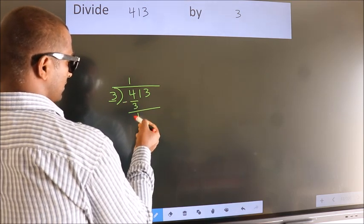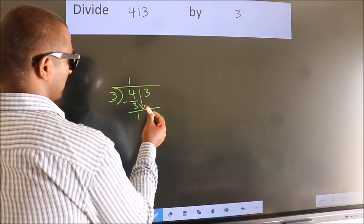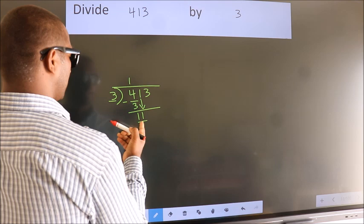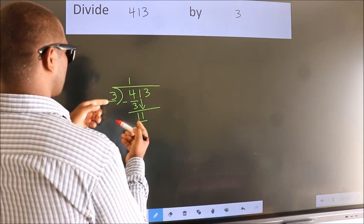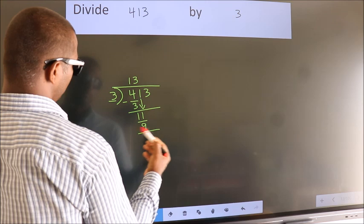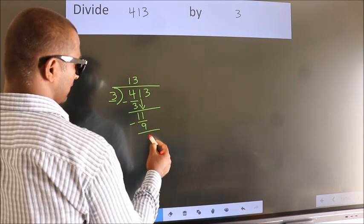After this bring down the beside number. So 1 down. So 11. A number close to 11 in 3 table is 3 3s 9. Now we subtract. We get 2.